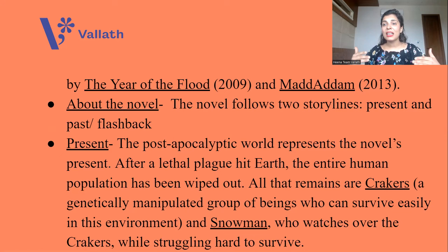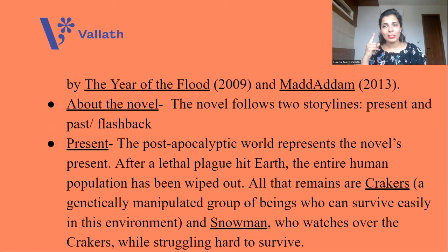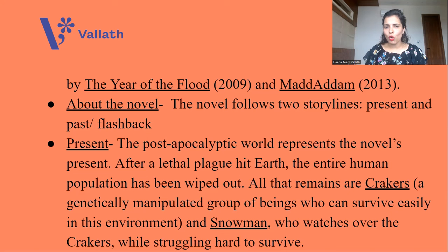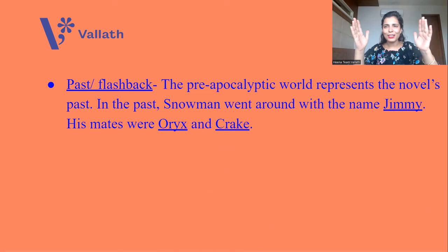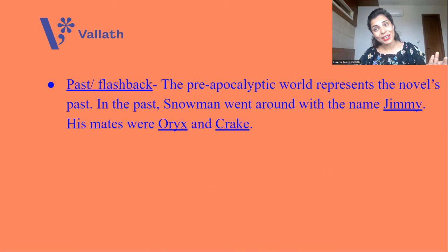All that remains are Crakers — a genetically manipulated group of beings who can easily survive in this kind of environment. And one special survivor human being who remains in this present time is Snowman. Snowman guides and watches over these Crakers while struggling very hard to survive in these conditions. The second part of the novel will be the past or flashback, which Snowman keeps thinking about in his mind — memories that form the past of the novel, representing a pre-apocalyptic world before the destruction happened.